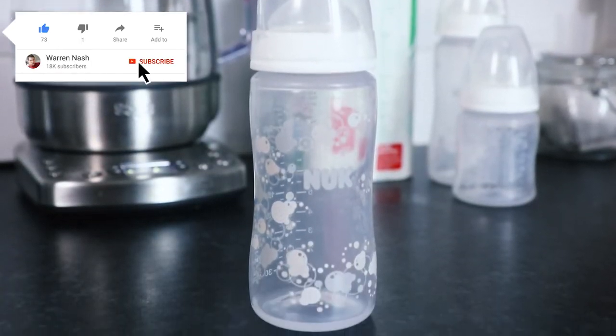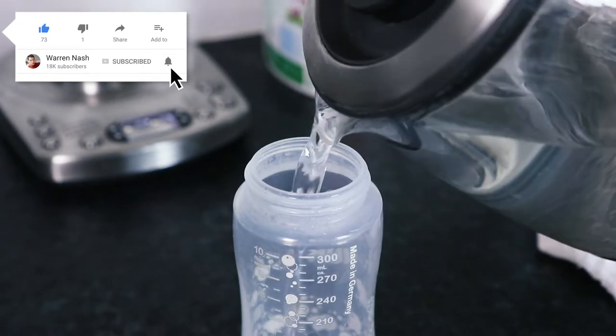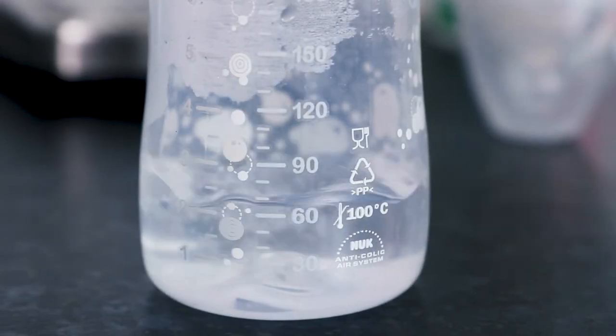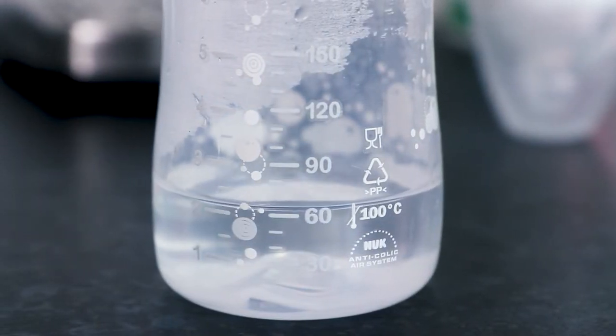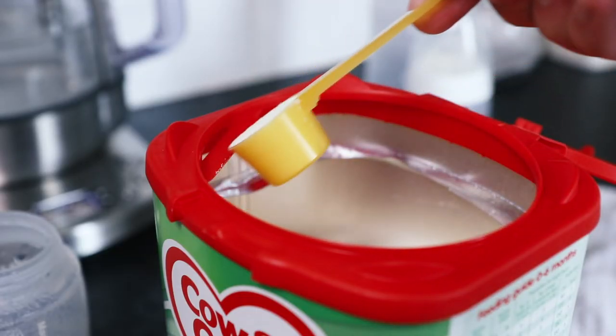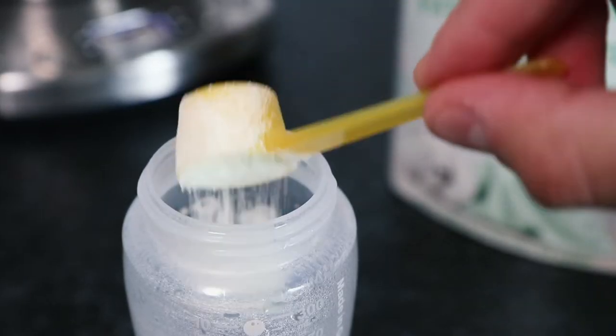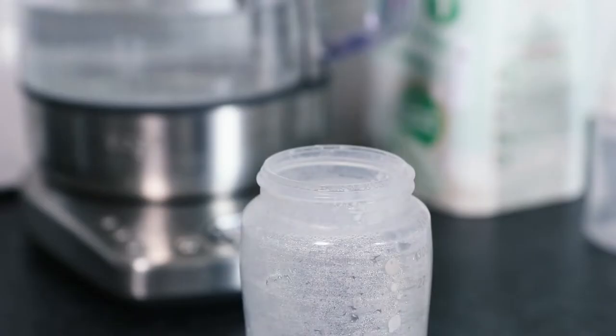Firstly, take your sterilized bottle that you'll be making your formula milk up in, and instead of filling it with freshly boiled water, fill it with just a couple of ounces instead. Then add the number of scoops of formula that you need to make your bottle up, then give it a good shake.